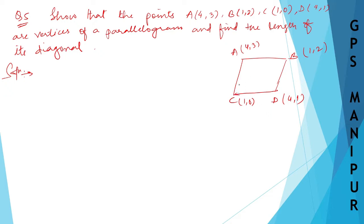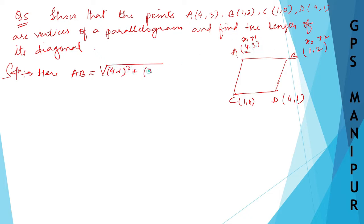We need to prove that all these points form a parallelogram. So AB is equal to the root over: taking A as (x1,y1) and B as (x2,y2), the formula gives us (4 minus 1) squared plus (3 minus 2) squared, which is root over 9 plus 1, equal to root 10.